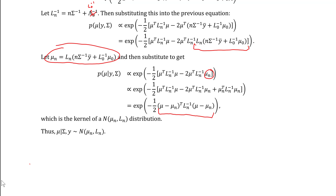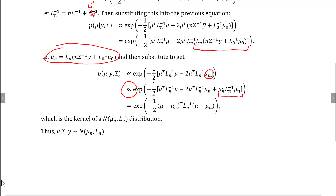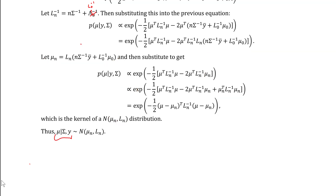We define mu-n to equal L-n times the sum of n-sigma-inverse-y-bar plus L-naught-inverse-mu-naught. We then replace the term shown here with mu-n. We want to complete the square so we can get the nice quadratic form, so we add mu-n-transpose L-n-inverse mu-n. Since this term does not involve the random vector mu, we can factor out mu-minus-mu-n-transpose in the front and mu-minus-mu-n in the back to get this nice quadratic form. This is the kernel of a multivariate normal distribution with mean vector mu-n and covariance matrix L-n. Thus the full conditional distribution for mu is multivariate normal with mean vector mu-n and covariance matrix L-n.